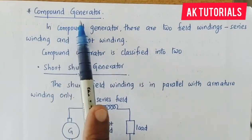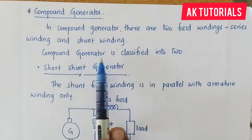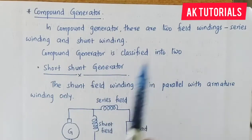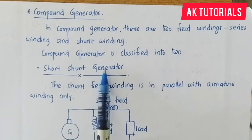The compound generator has two types of classification. The compound generator is classified into two: short shunt generator and long shunt generator.